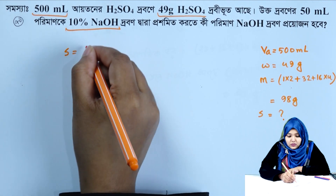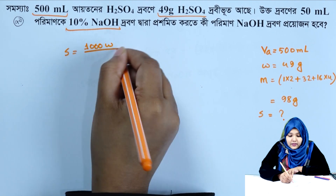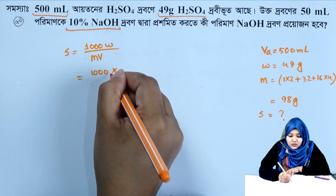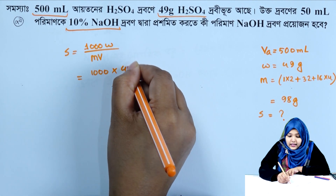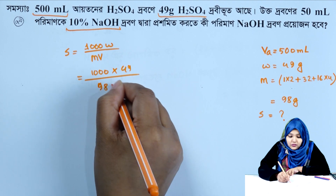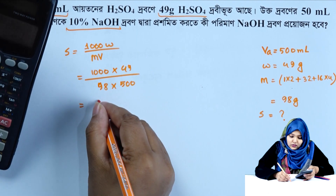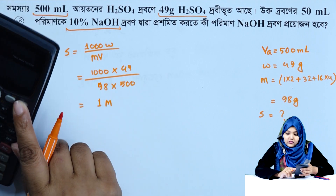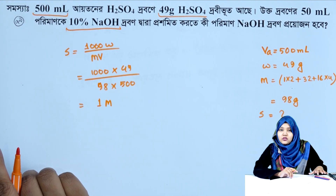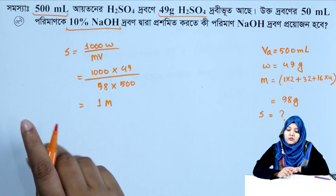Using the molarity formula: S equals 1000 times W divided by M times V. Substituting: 1000 times 49, M equals 98, V equals 500. Result: molarity equals 1 molar. So 500 mL sulfuric acid solution has molarity equal to 1 molar.